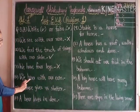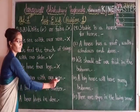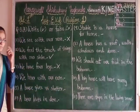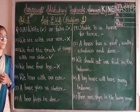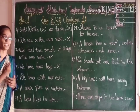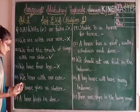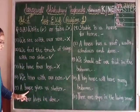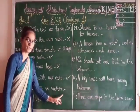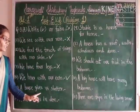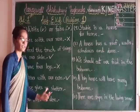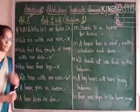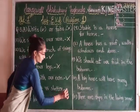Number 4: we hear with our ears. We hear with our ears, so it is true. Number 5: a house gives us shelter. A house gives us shelter — yes, it is true.